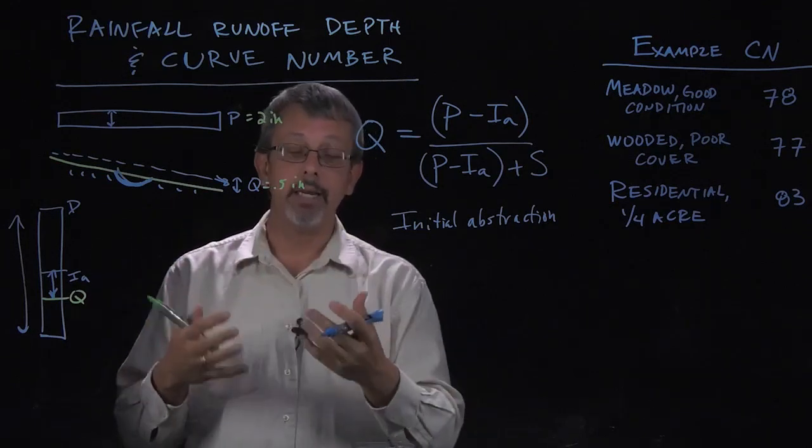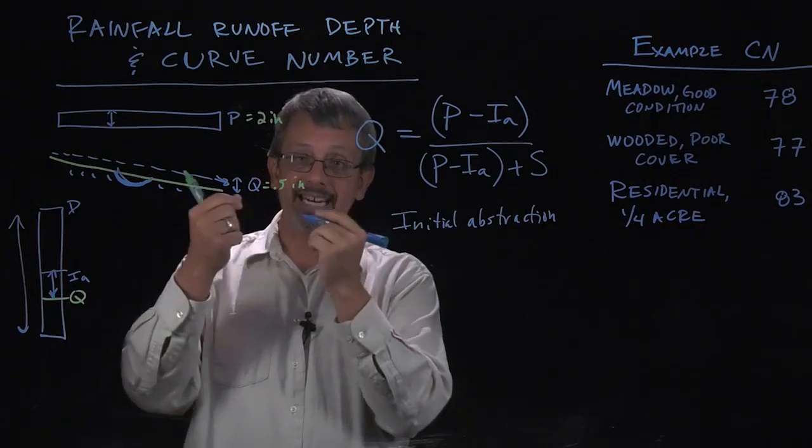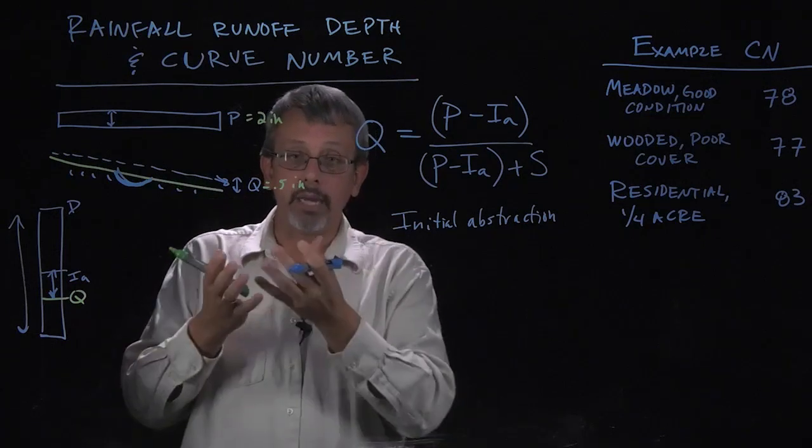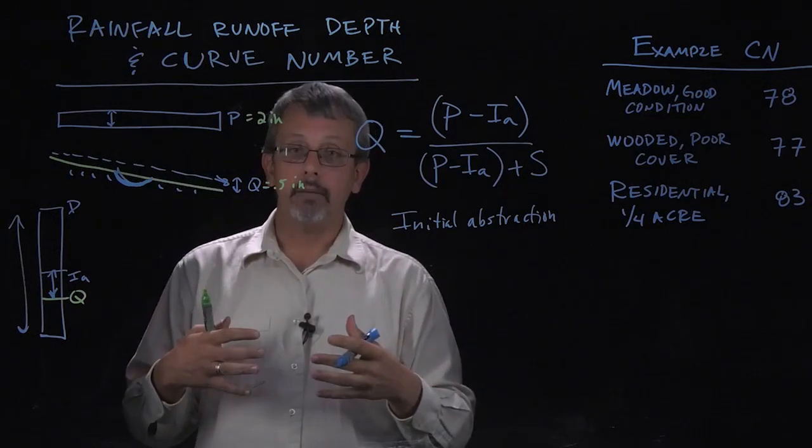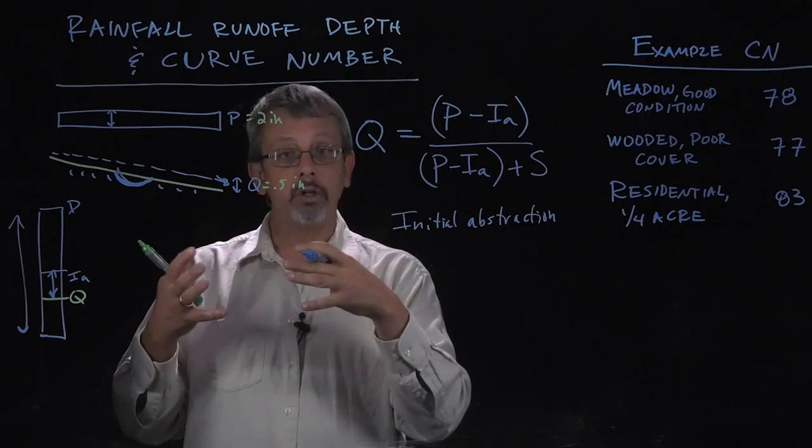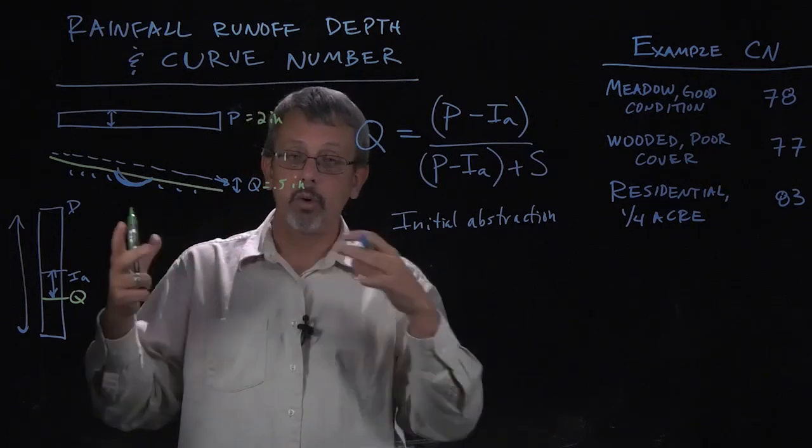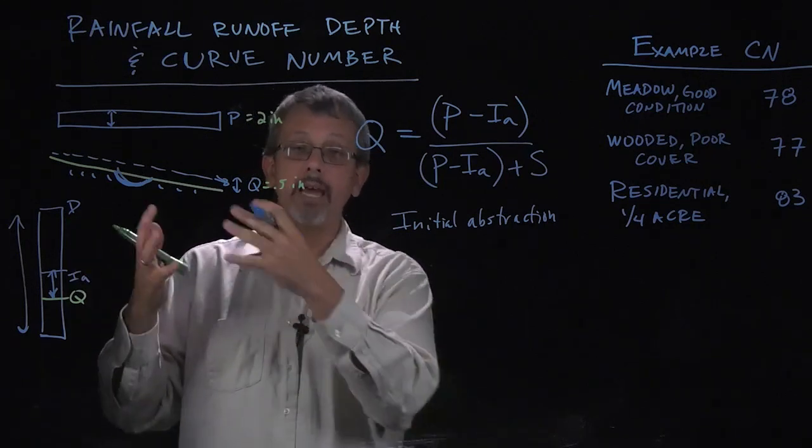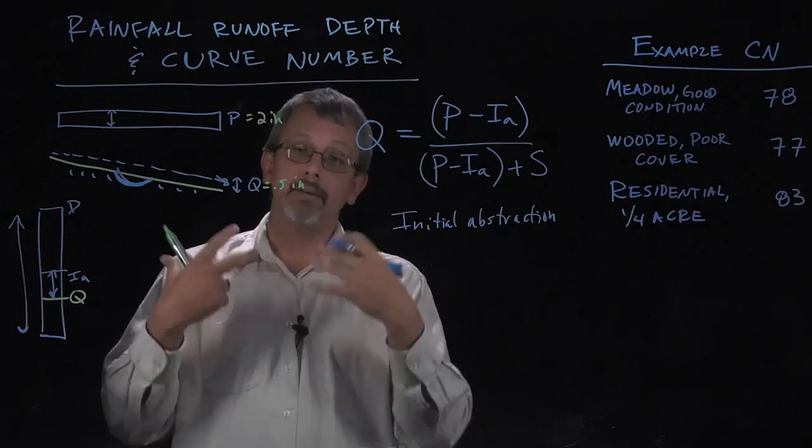Once the puddles are full, or everything, all the water has coated all the surfaces, so now everything's wet, then the water will start to flow. So that's the idea of our initial abstraction.